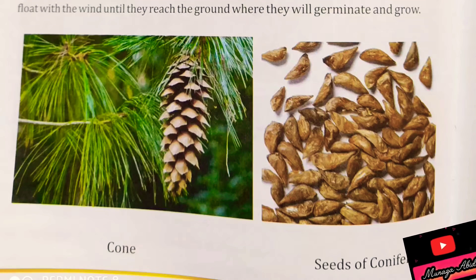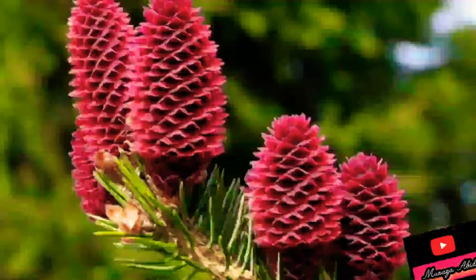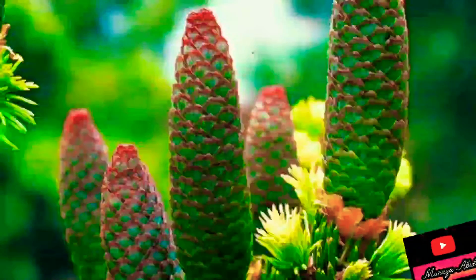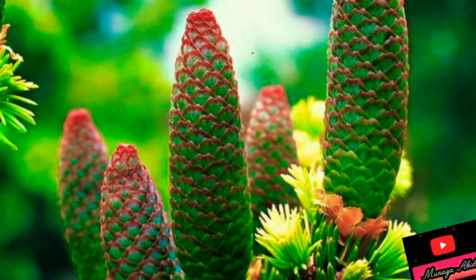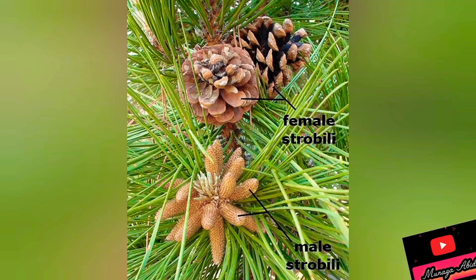Conifers are evergreen plants and mostly their fruiting bodies are in the form of cones. Can you see these beautiful cones? These cones are of two types: they can be female cones and they can be male cones. The male cones are mostly at the bottom and the female cones are at the top.